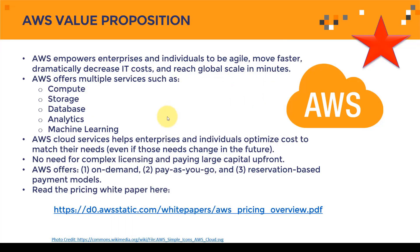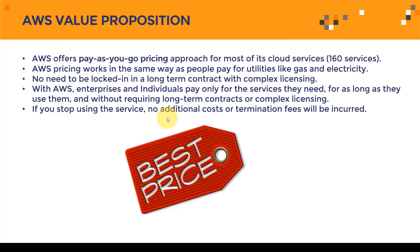AWS offers a pay-as-you-go pricing approach for most of its over 160 cloud services. Think of it as paying for gas and electricity — you just pay per use. If you turn off your lights or air conditioner, you won't be charged for utilities. AWS works the same way, so you don't need to be locked into any long-term contracts with complex licensing.